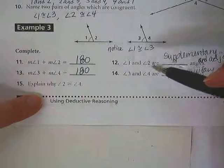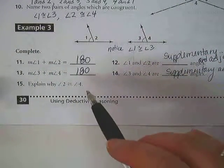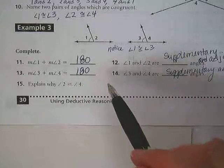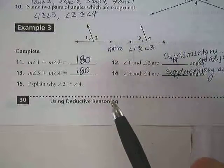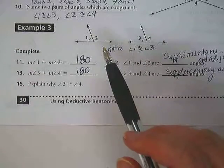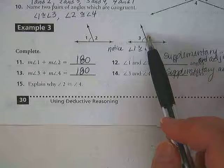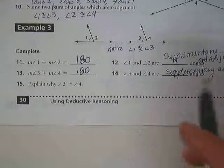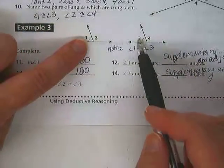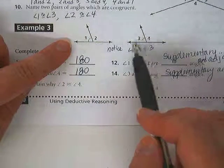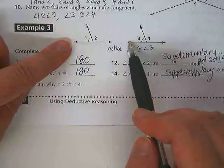Explain why angle 2 is congruent to angle 4. Wait a minute. The picture doesn't say angle 2 is congruent to angle 4. Why are they suddenly asking me why those are congruent? It's not even saying that they are. It's just saying why are those congruent. That's weird. So let's ask this question first. Is angle 2 congruent to angle 4? Yeah, they are. How do we know that? Well, it's because angle 1 is congruent to angle 3.